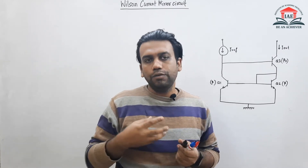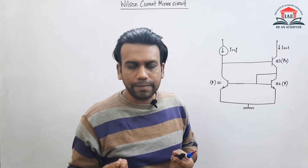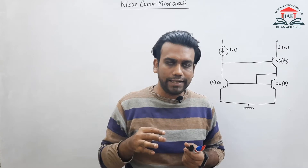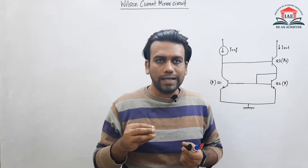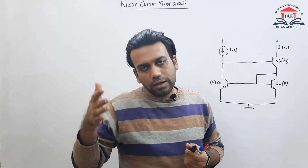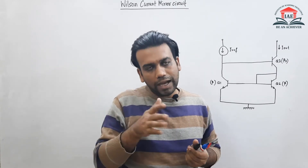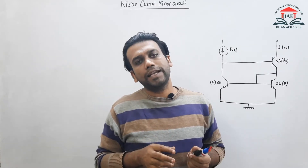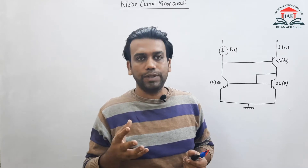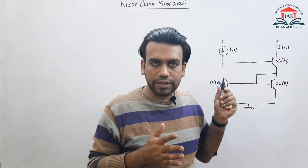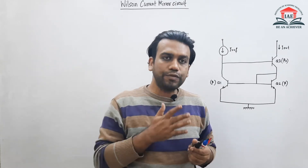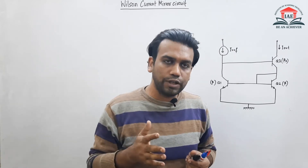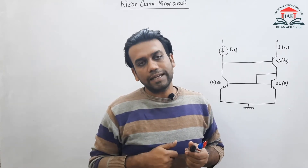Previously we have done some current mirror circuit modifications, and all the current mirror circuits we studied earlier were valid either for low values of beta or high values of beta. But the Wilson current mirror circuit will be valid for any value of beta — both low and high.